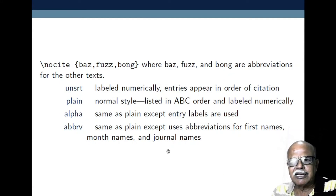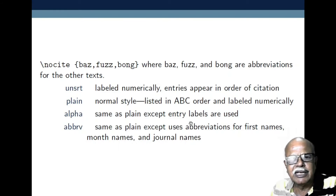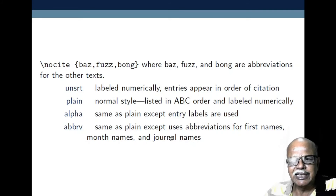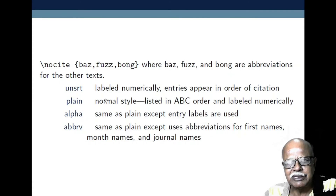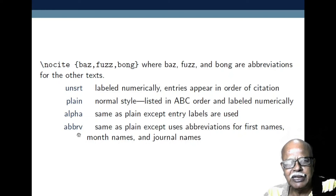There are standard styles available. The first one is 'unsrt': references are labelled numerically in the same order in which they appear in the body of the text. The second style is 'plain': the list is arranged in alphabetical order and then labelled numerically. The third style is 'alpha': same as plain, except that entry labels are used. The fourth is 'abbrv': same as plain, except it uses abbreviations for first names, month names, and journal names.